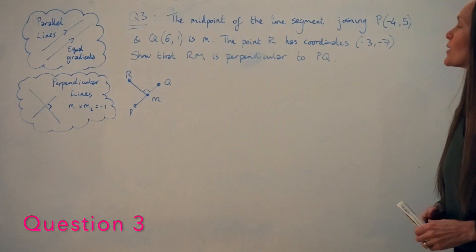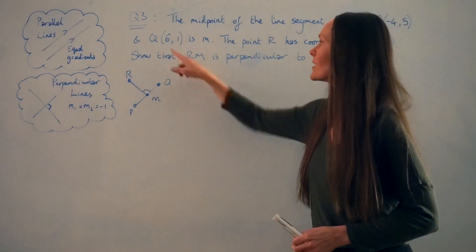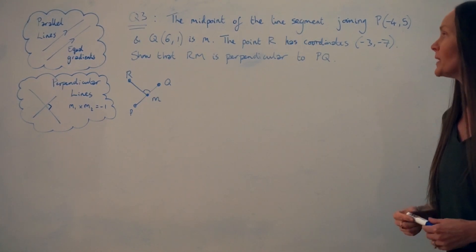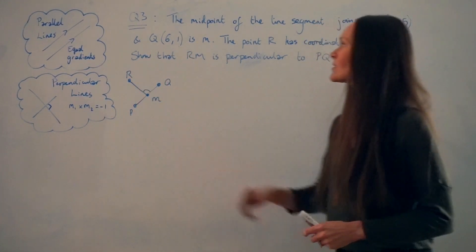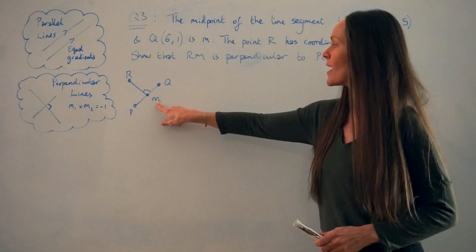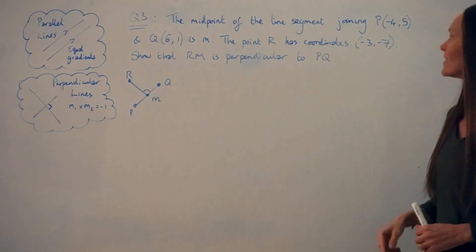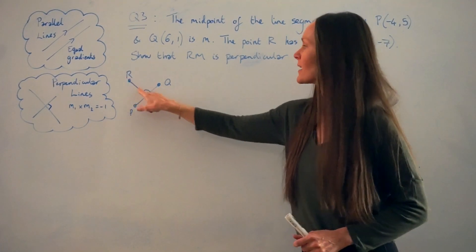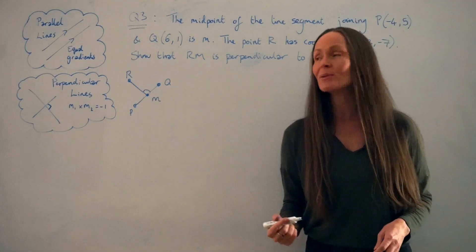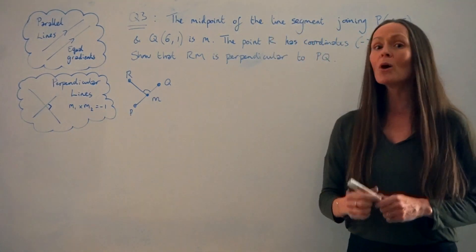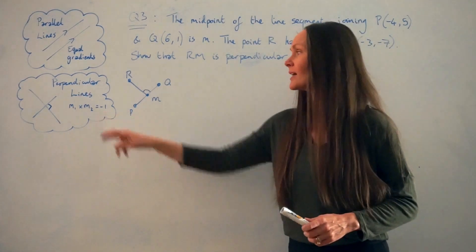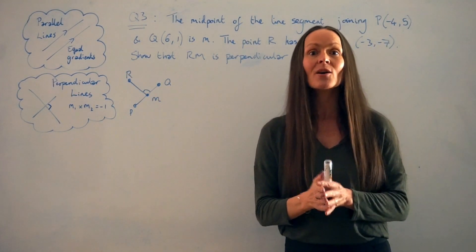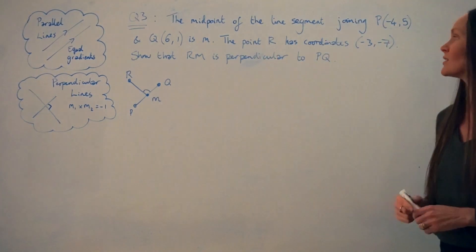In the next question, the midpoint of line segment PQ, where P is (−4, 5) and Q is (6, 1), is N. The point R has coordinates (−3, −7). We have to show that RN is perpendicular to PQ. I've done a rough sketch to help. PQ is here, N is the midpoint halfway along that line, and R is another point. They make an angle of 90 degrees. When two lines are perpendicular, multiplying their gradients should give −1.